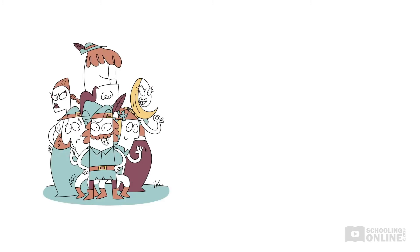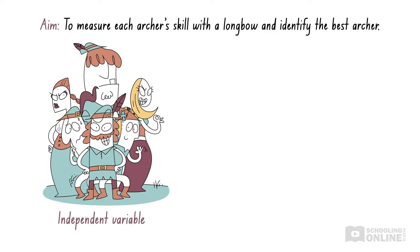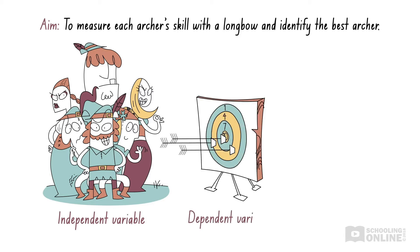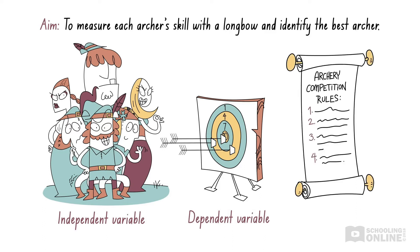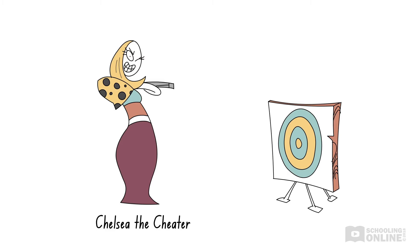Let's return to our archery competition from the previous videos, where the contest is drawing to a close. The aim of this competition is to measure each archer's skill with a longbow and identify the best archer. The independent variable is the archer, which is a different person in every round. The dependent variable is each archer's score after they fire three shots. All other variables should be kept controlled to ensure that the competition is fair. Our last competitor is Chelsea the Cheetah, who doesn't always play fair.